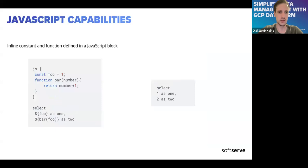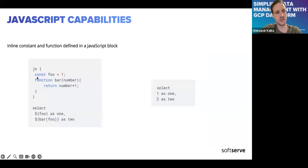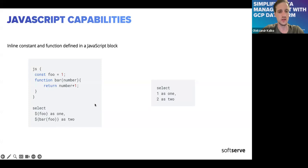Let's talk about JavaScript capabilities inside Dataform. You can define JavaScript blocks directly inside the model. Here's an example: we define a constant foo equal to one and define a function bar. At the bottom, we reference the foo variable and apply function bar, resulting in two. This code compiles to 'select 1 as one, 2 as two.' Pretty straightforward.